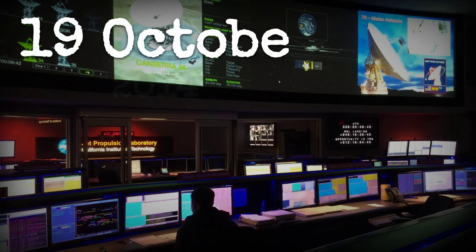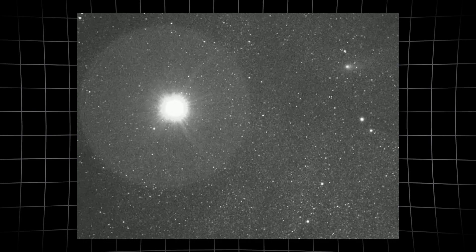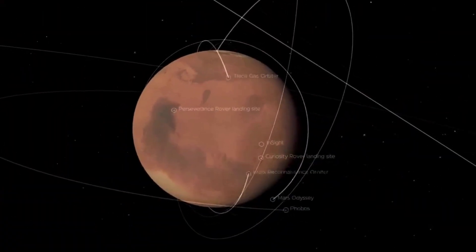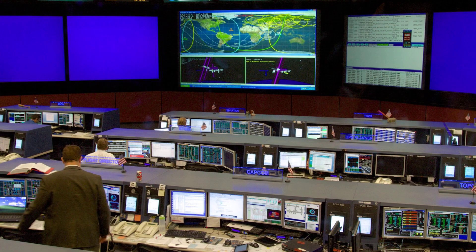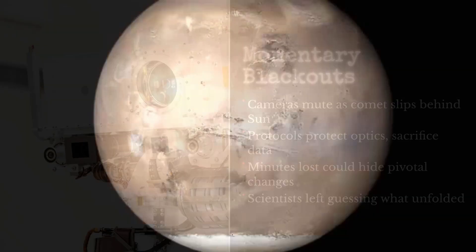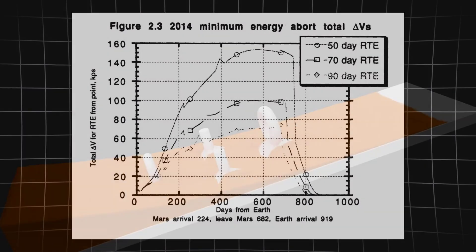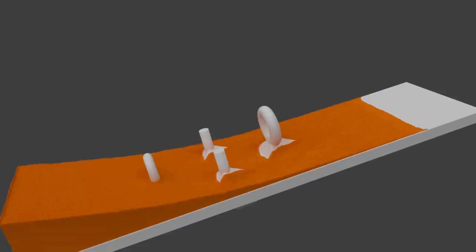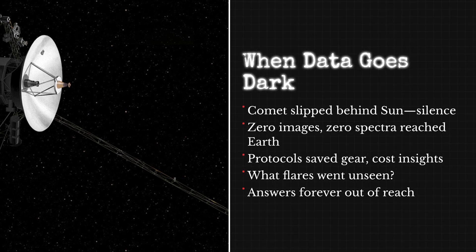October 19th, 2014. As comet C/2013 A1 Siding Spring hurtled past Mars at 56 kilometers per second, every orbiter in Martian skies went silent. The blackout, lasting up to seven hours, was not a drill. HiRISE, CRISM, MAVEN, and Mars Express all powered down cameras and spectrometers, bracing for a dust storm that could cripple hardware. The official risk window, mapped to the minute, coincided with the comet's closest approach and the peak probability for high-velocity particles. For those hours, no science images, no spectra, not even health packets from key instruments crossed the void to Earth.